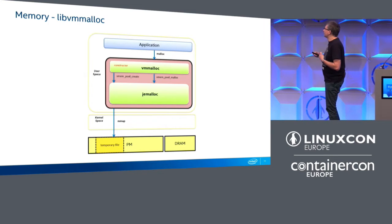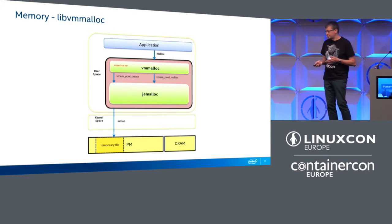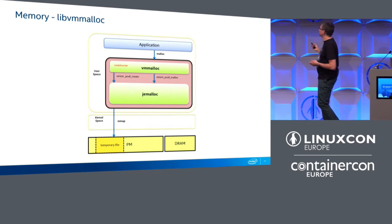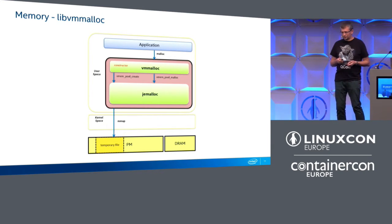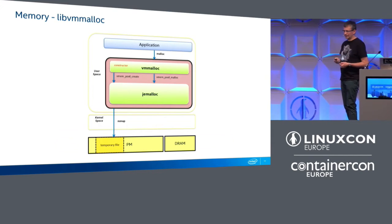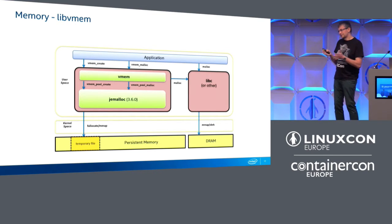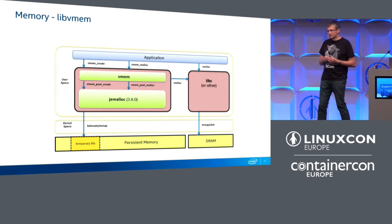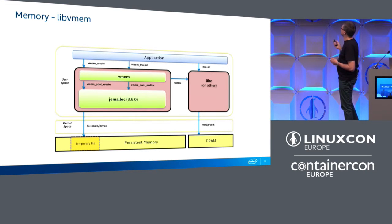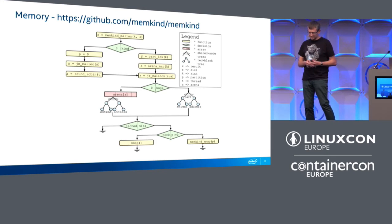The first one, libvmmalloc, actually replaces during compile time all your malloc calls with the ones we provide. All your allocations go to persistent memory, which is a bit slower than working on DRAM, but maybe this is what you want. It's the easiest way to deploy because it requires no changes to the application. A bit more complicated is when you want to tune your application and have some data on DRAM and some on persistent memory, which can give some advantages, but you need to change your application. Another very similar library is Memkind, which is also open source.